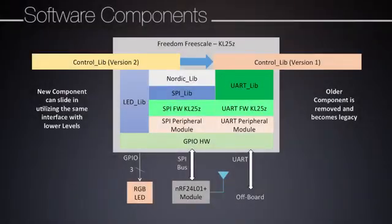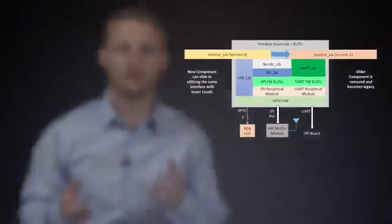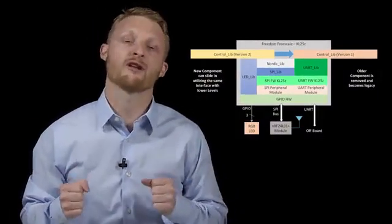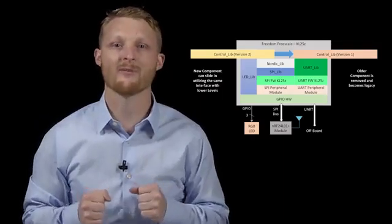A common software block design method is called component design. This is where we define small functional software blocks that have certain tasks. We define the interface mechanisms and the specs that each module needs to adhere to. By doing this, you can build modularized software that is reusable across different systems, architectures, and platforms. Good interface definitions are a key for successful implementation.